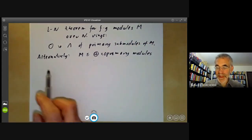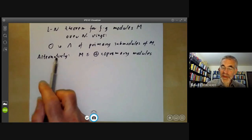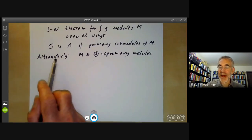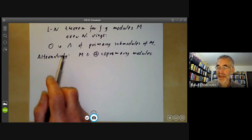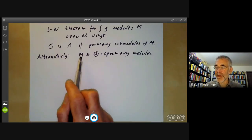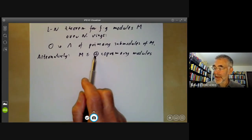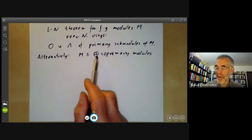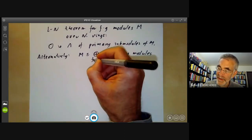Originally, the Lasker-Noether theorem was thought to be a theorem about ideals, saying that every ideal is an intersection of co-primary ideals. It's really more useful to think of it as being a theorem about modules, saying that every module is contained in a direct sum of co-primary modules, and then this should be a finite direct sum.